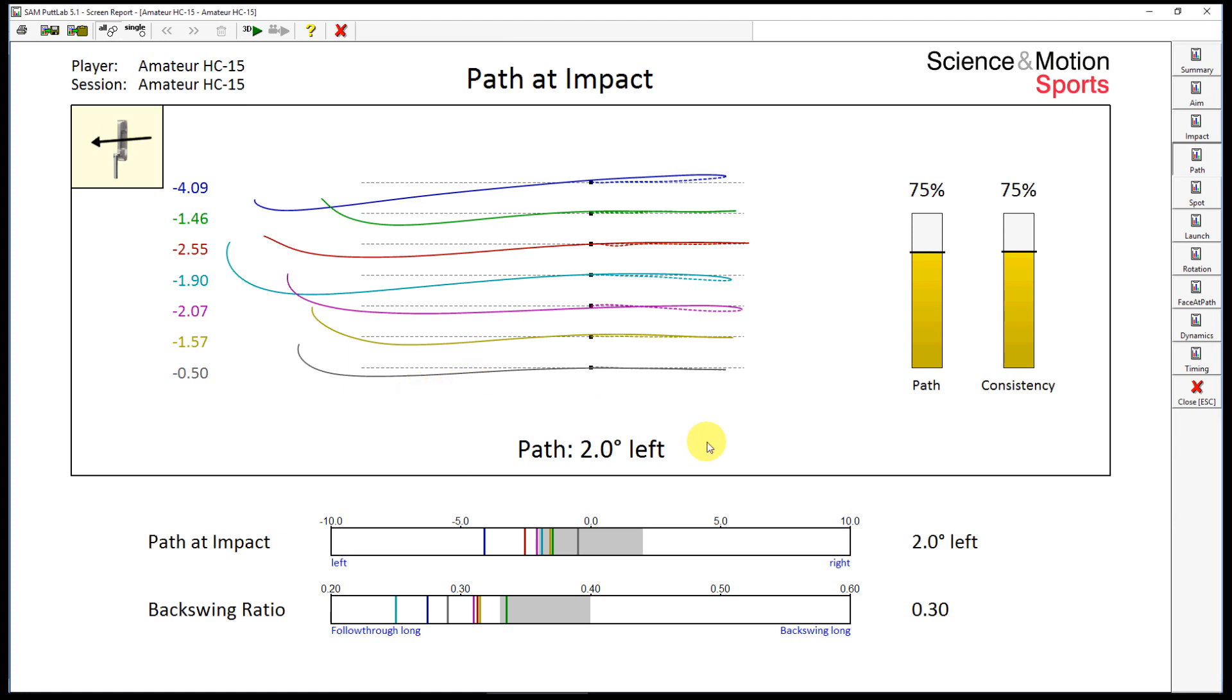The influence of the path direction on the initial direction of the ball is only 17% or even less, so it is more than 5 times less important as face angle at impact, with 83%. So the consequences of path direction on ball direction are quite limited.